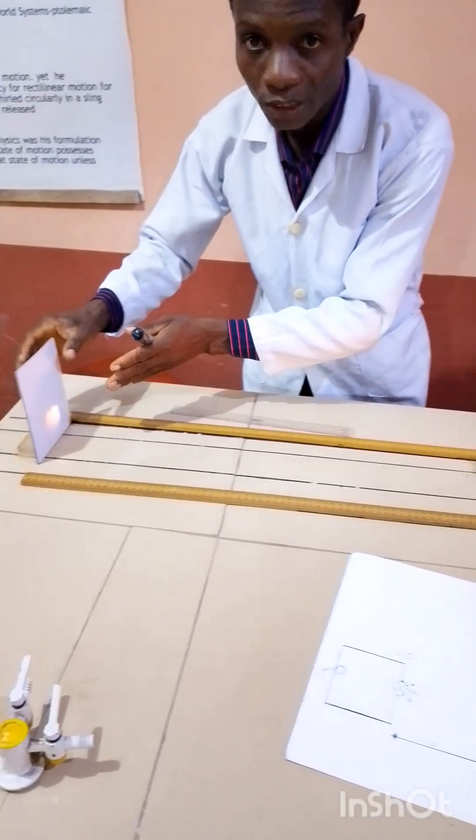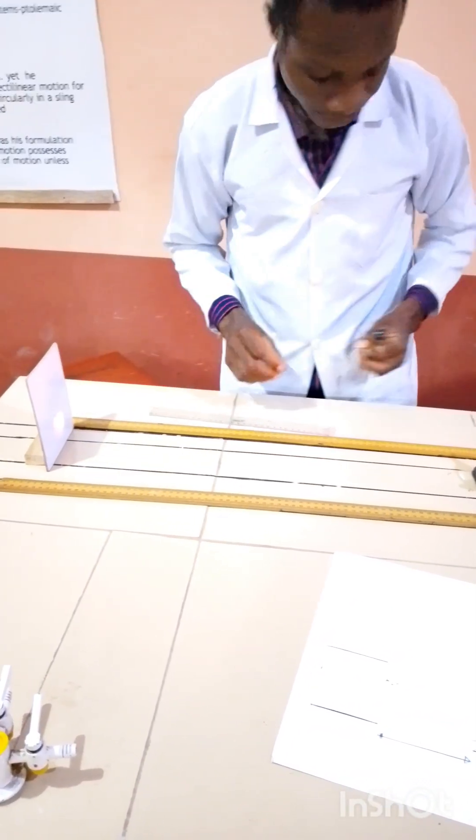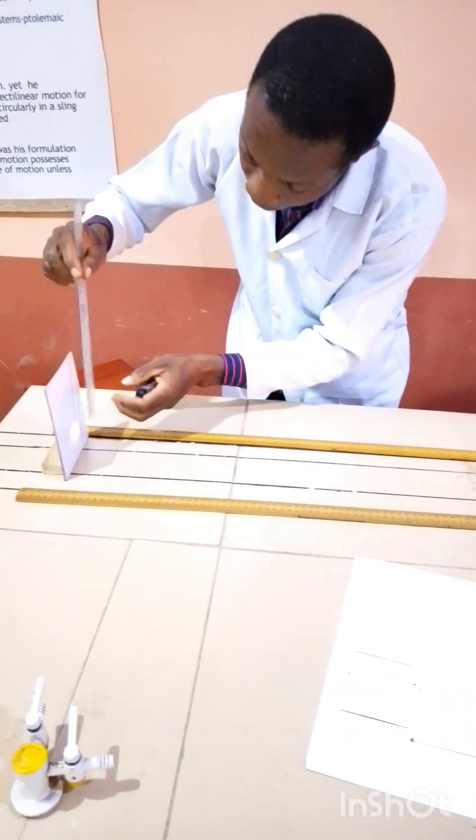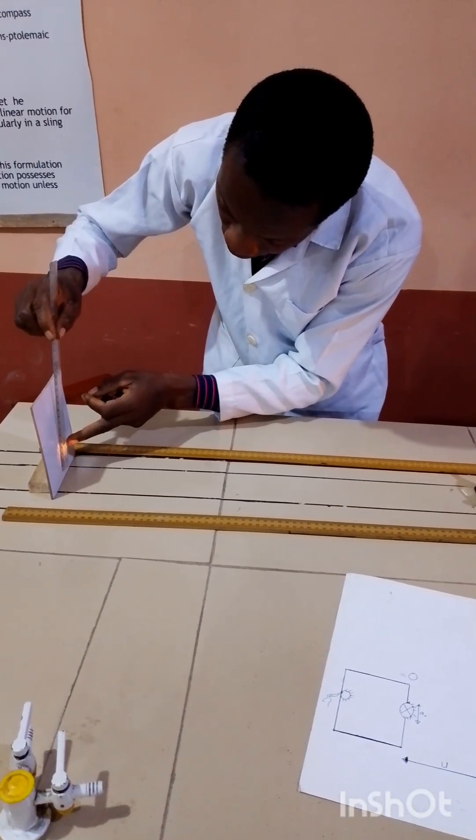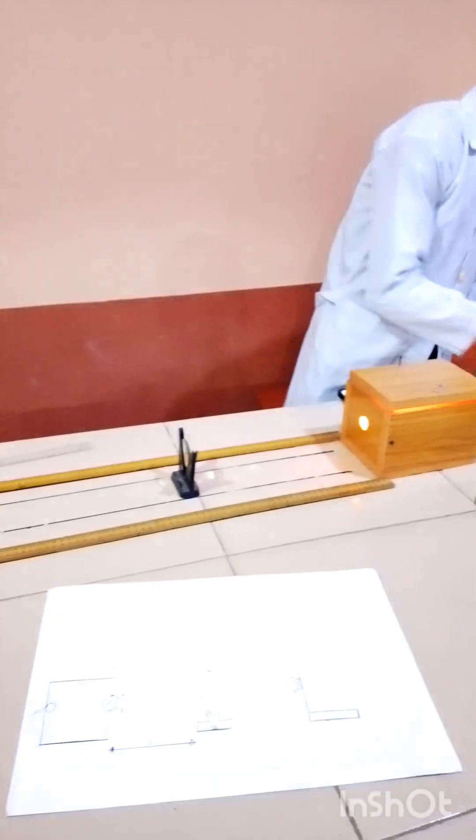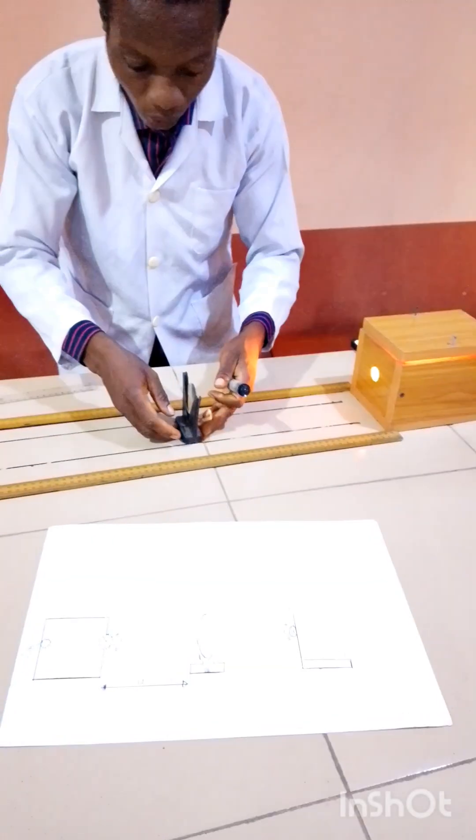After switching on the light, I will adjust the screen, the white screen. Then, use my ruler to measure the size of the illuminate of the image. So, it is 4. I will write 4 here. That is 4.